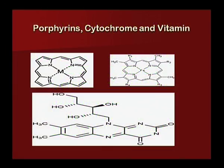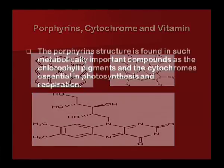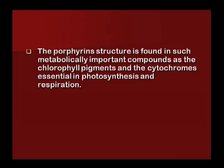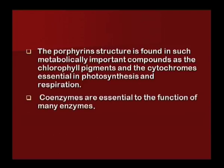Nitrogen is also present in porphyrins, cytochromes, and vitamins. The porphyrin structure is found in metabolically important compounds such as the chlorophyll pigment and cytochromes, which are essential in photosynthesis and respiration. Coenzymes are essential to the function of many enzymes. Vitamins also contain nitrogen.